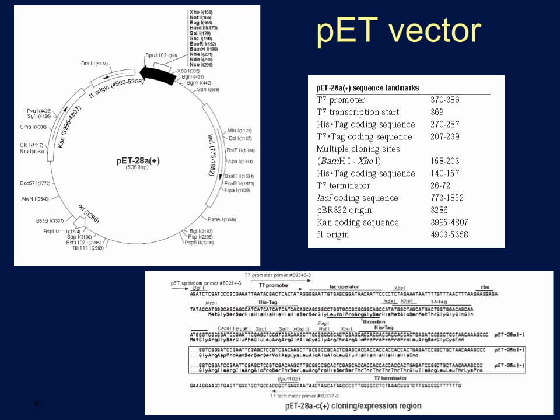The fourth required element, the promoter site, is not obvious in the vector map, but in the sequence of the multiple cloning sites region shown at the bottom, you should be able to identify the T7 promoter. This promoter responds to IPTG, which stands for isopropyl beta-D1 thiogalactopyranoside. That is a chemical inducer that, when added to the E. coli, will turn on the transcription of the gene of interest. You can also see all of the different multiple cloning sites — the different restriction sites in which you can insert your gene of interest — and identify where you could attach a HIS tag to your gene, either at the N-terminus or the C-terminus.